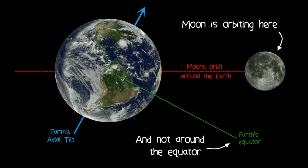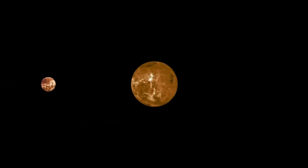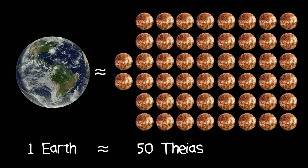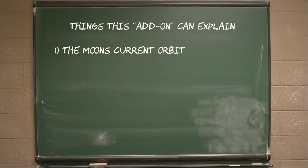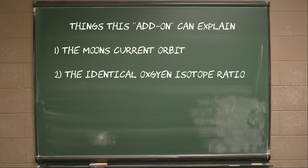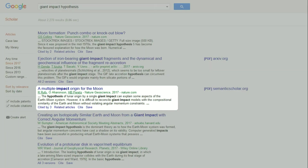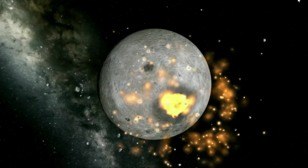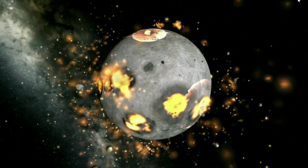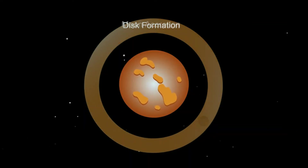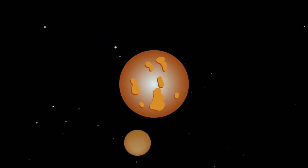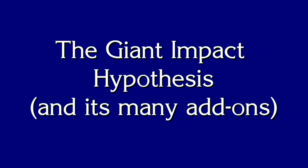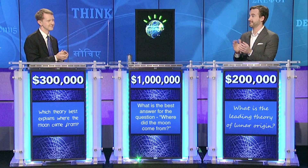Originally, it was proposed that Theia hit Earth with a glancing blow, to account for the Moon's current orbit. But in 2012, it was suggested that a rapidly spinning young Earth was hit head-on by a much smaller object — something with about 2% the mass of the Earth — which would not only place the Moon in its current orbit but also explain the identical chemistry of both bodies. In January 2017, researchers in Israel suggested the Moon was formed by not one impactor but dozens; these smaller but constant impacts kicked up material into orbit around the Earth, which eventually coalesced to become the Moon. Though not perfect, the Giant Impact Hypothesis and its many add-ons are the best answer we have for the question: where did the Moon come from?